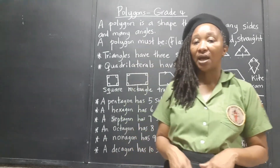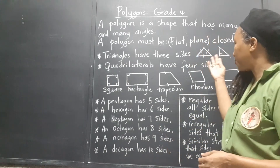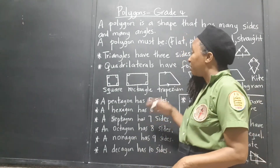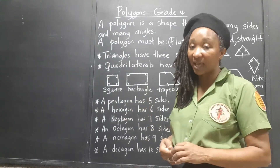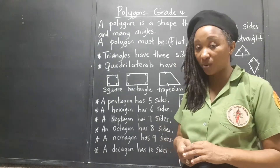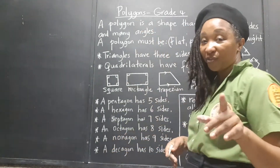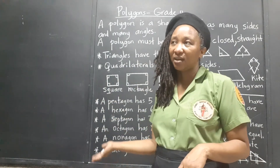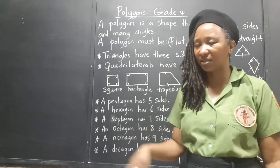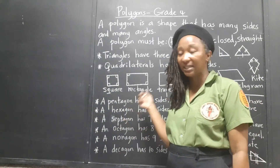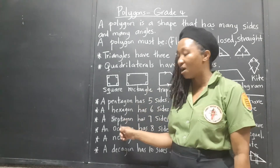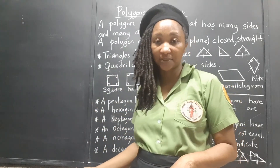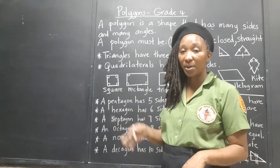The three-sided polygons are triangles — many types, and we'll do a dedicated video on them. The four-sided polygons are quadrilaterals, and they too deserve their own video. Then we have special names up to ten: pentagon — five sides; hexagon — six; septagon — seven; octagon — eight; nonagon — nine; decagon — ten. Use the prefix to help you remember.